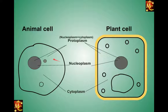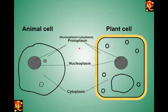In both animal and plant cells there is protoplasm. The part outside the nucleus is called cytoplasm and the part inside is called nucleoplasm. Together, nucleoplasm and cytoplasm are called protoplasm.